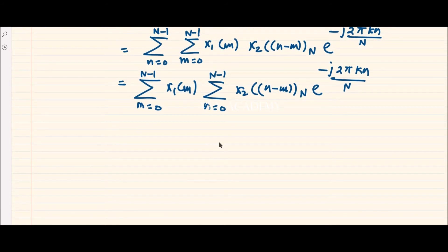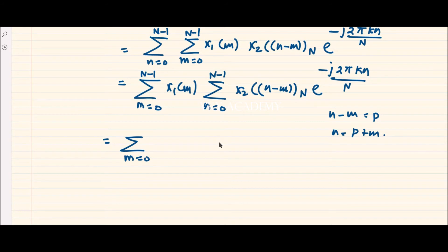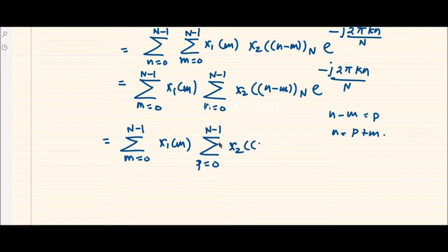Now let us apply the substitution: let p = n − m, so n = p + m. With this substitution, the inner summation over n becomes a summation from p equals 0 to N-1 of x2(p mod N) · e^(−j2πk(p+m)/N).